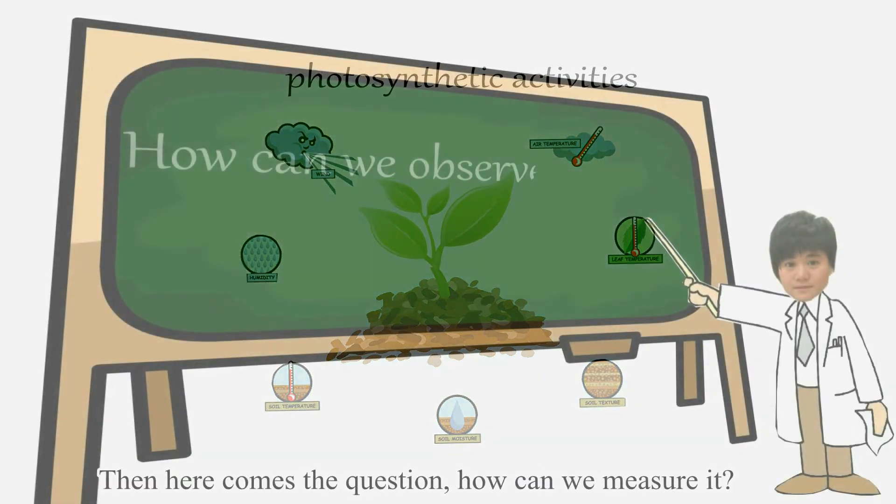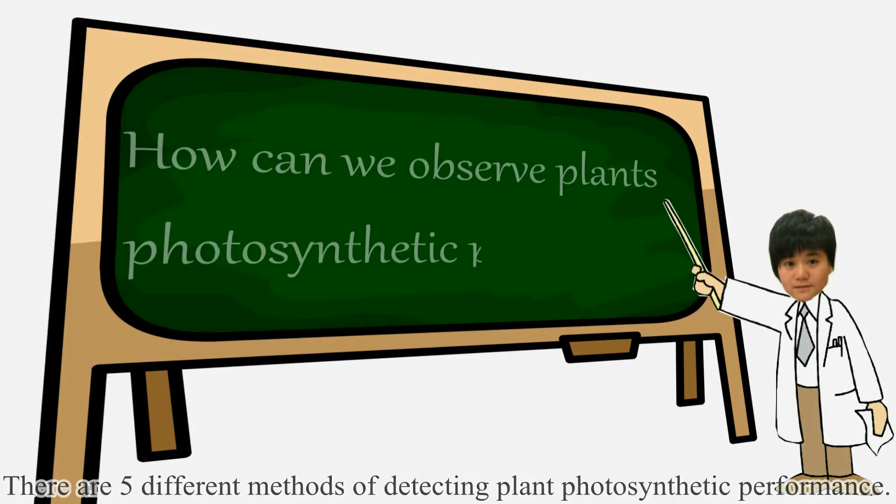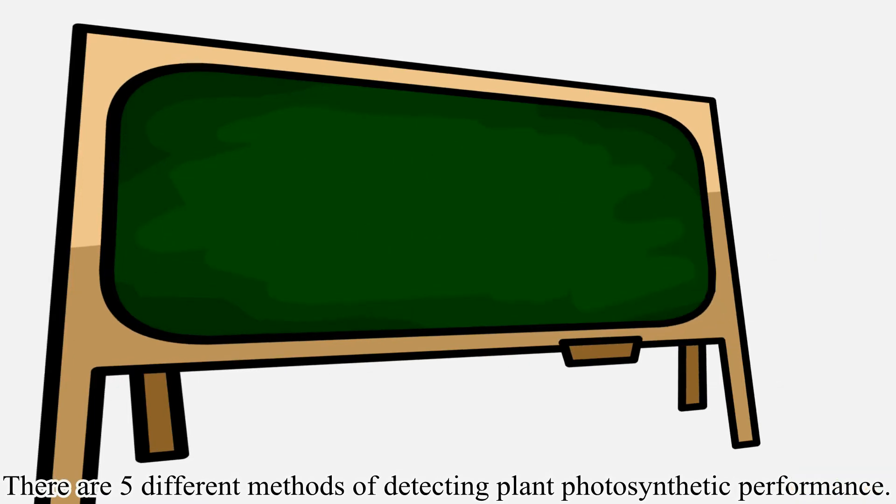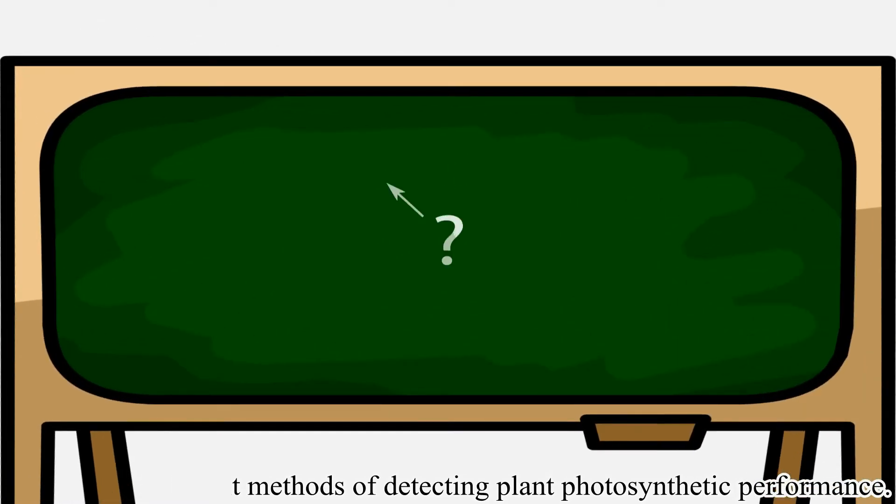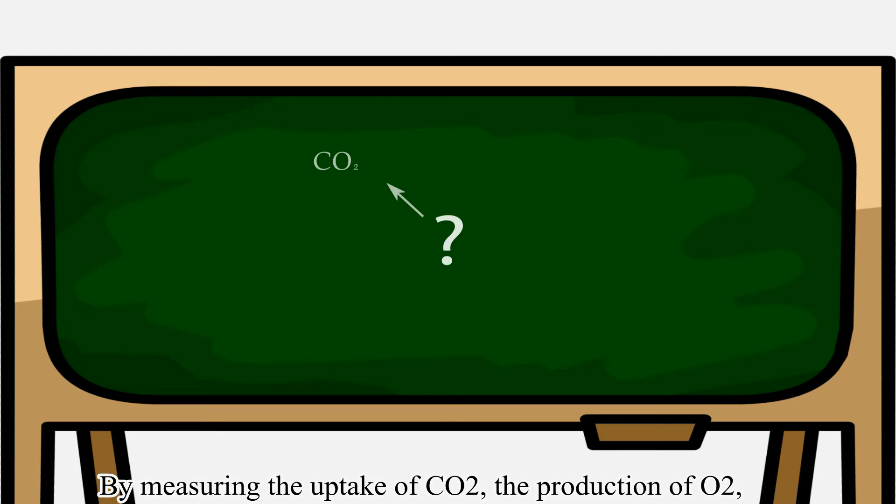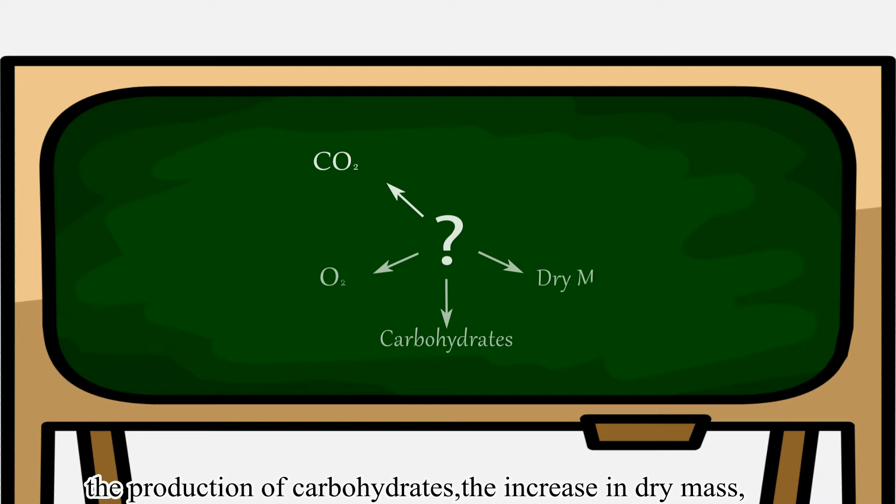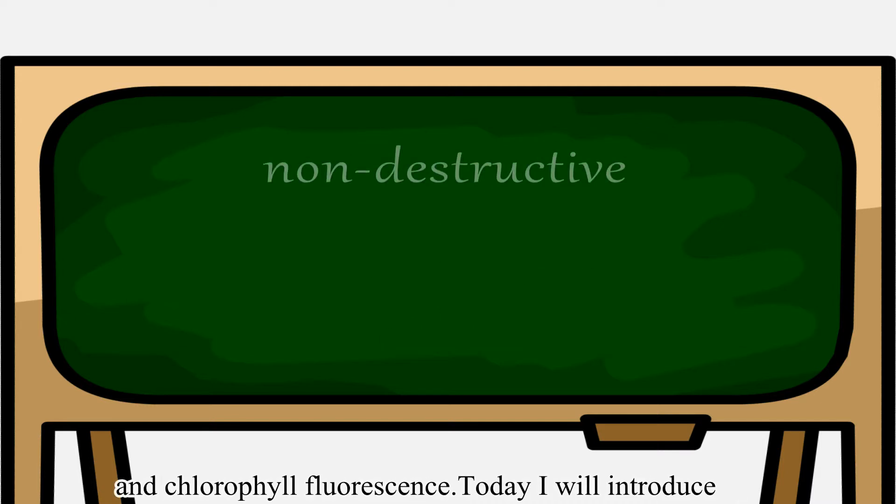Then, here comes the question: how can we measure it? There are five different methods of detecting plant photosynthetic performance: by measuring the uptake of CO2, the production of oxygen, the production of carbohydrates, the increase in biomass, and the chlorophyll fluorescence.